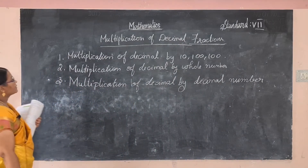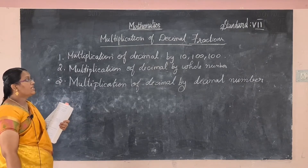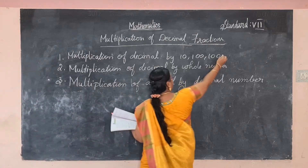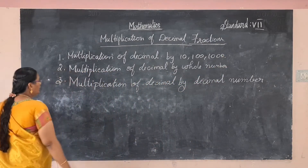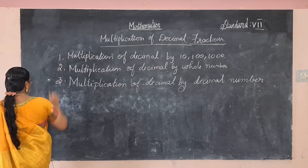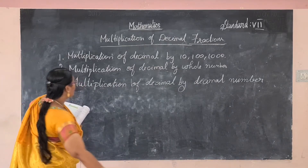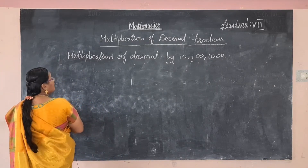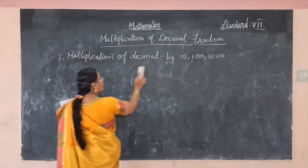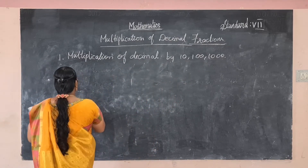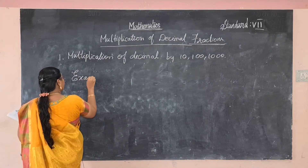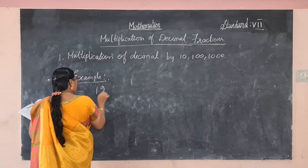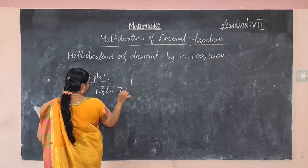In this class we will learn the multiplication of decimals by ten, hundred, and thousand. In this first method, we multiply the decimals by ten, hundred, or thousand. See the example: 126.735.